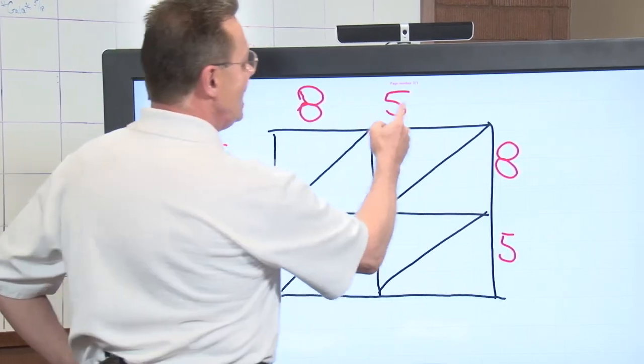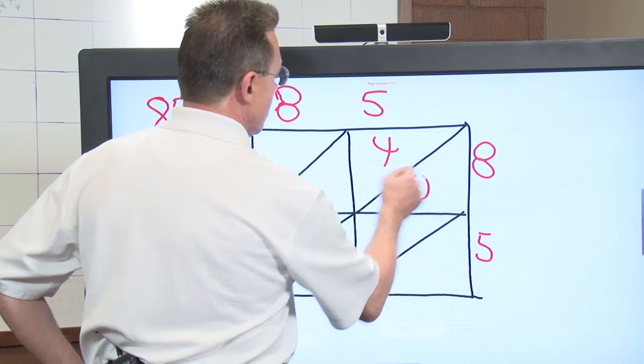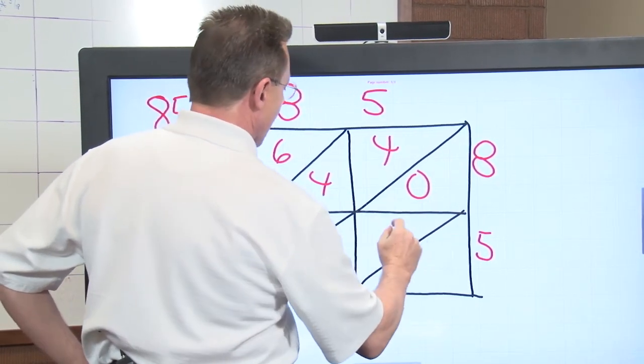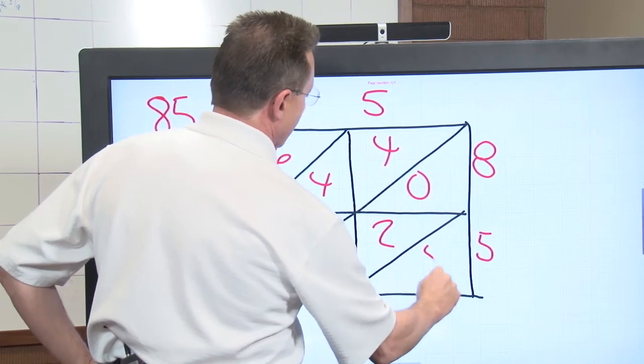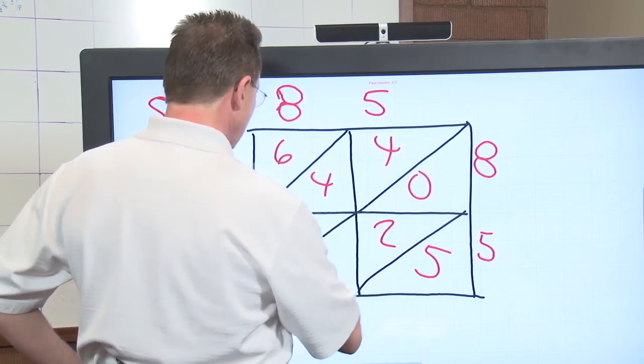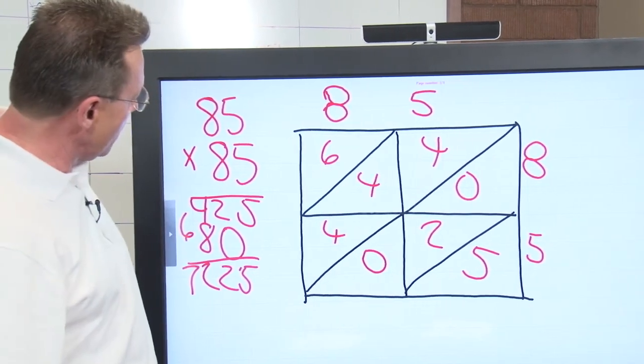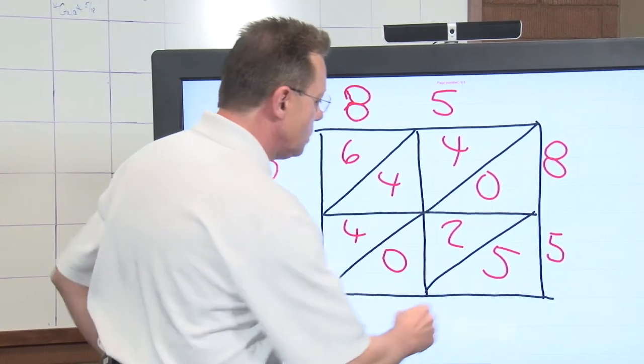Or you could do 8 times 5 times 5, which is 40. 8 times 8, which is 64. 5 times 5, which is 25. And 8 times 4, which is 4. Now, let's pick up our number.